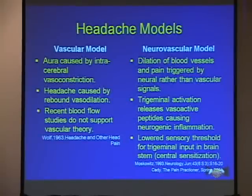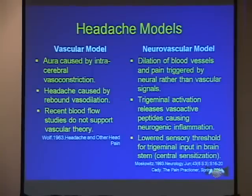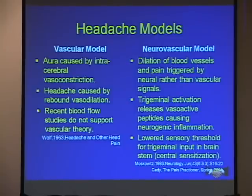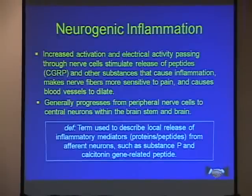There are two models here. The old model has been that headaches — migraines particularly — were a vascular problem. A local tissue event from muscle contraction, tension, and lactic acid is a muscle tension headache. But I'm speaking about the migraine kind that most physicians deal with. The new model is a neurovascular model: it's about the dilation of blood vessels, trigeminal activation, and central sensitization. Those are the words you need to get familiar with.